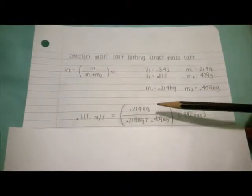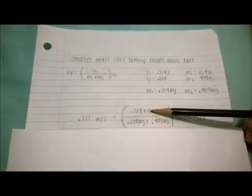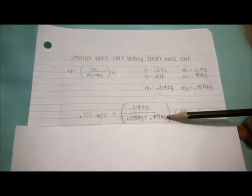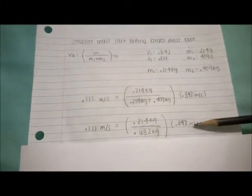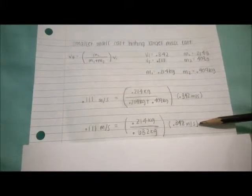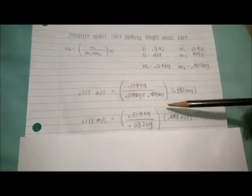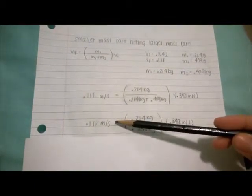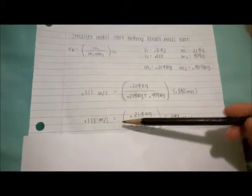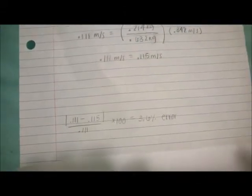To begin, we take the mass of the first cart, which is 0.214 kilograms, and divide it by the mass of the first cart plus the mass of the second cart, which is 0.409 kilograms. We then multiply that by the initial velocity of the first cart, which is 0.342 meters per second. To prove that this collision worked right, the product we get should be equal to or in close proximity to the final velocity of the carts, which is 0.111 meters per second. What we get is 0.115 meters per second, which is only 3.6% off.